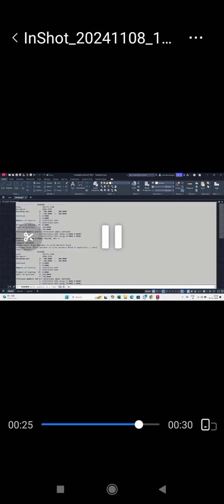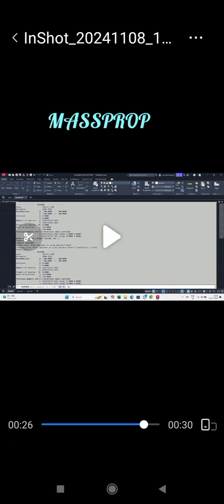This is circular section drawn in AutoCAD. And as soon as you type the mass prop command and select the object, we will get all this information. All this information means area, perimeter, and also moment of inertia. Thank you all.